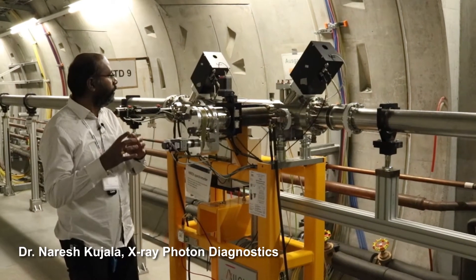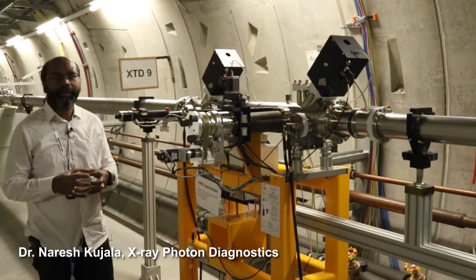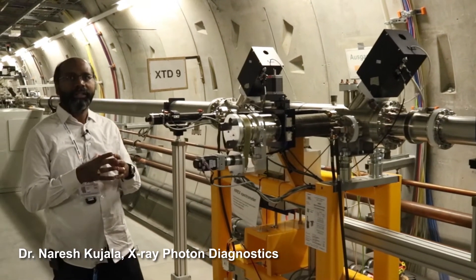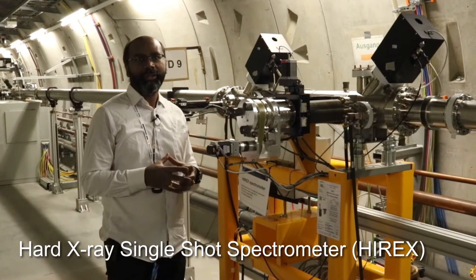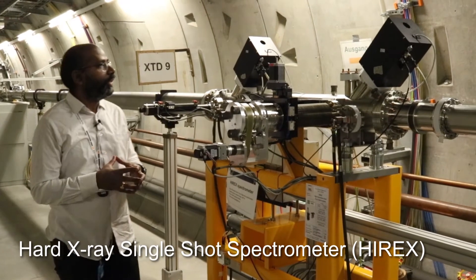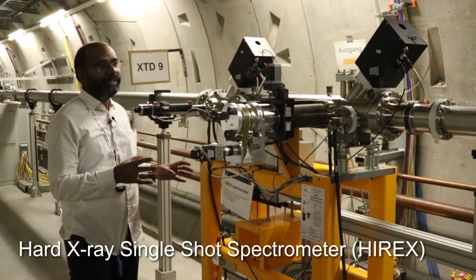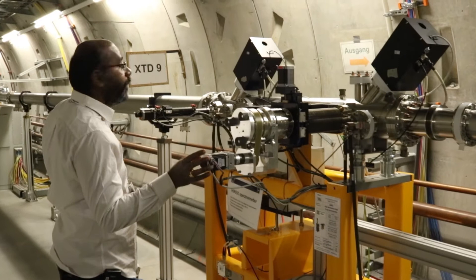Hello everyone. Now I'm going to show you the Hyrex spectrometer, which we call the hard X-ray single shot spectrometer, which is acronym of Hyrex. The Hyrex has two components: one is a grating unit, and the second one is a crystal unit.